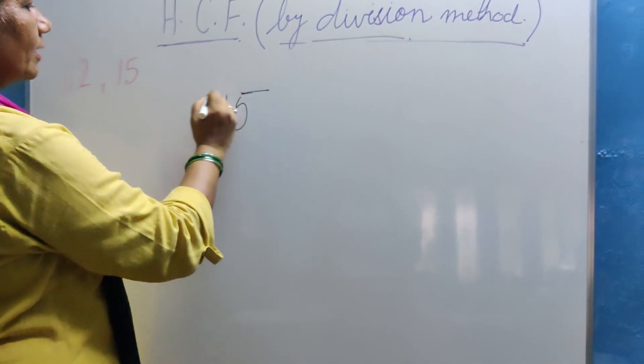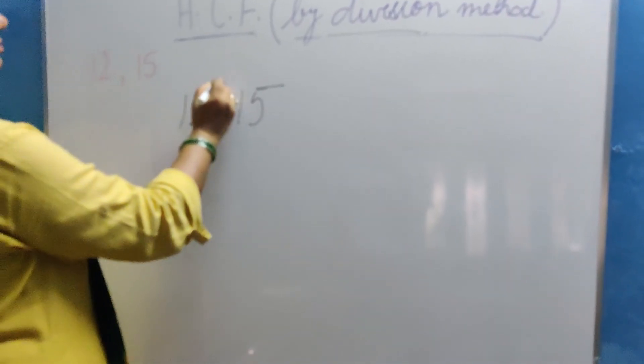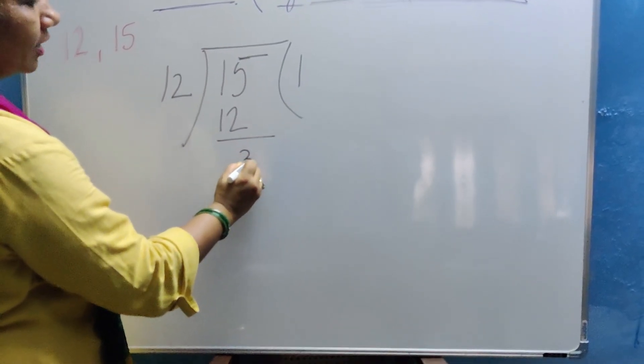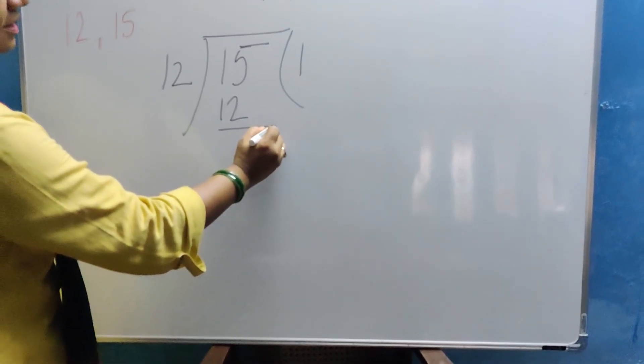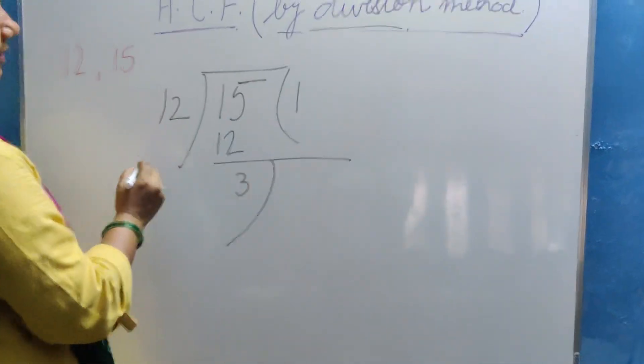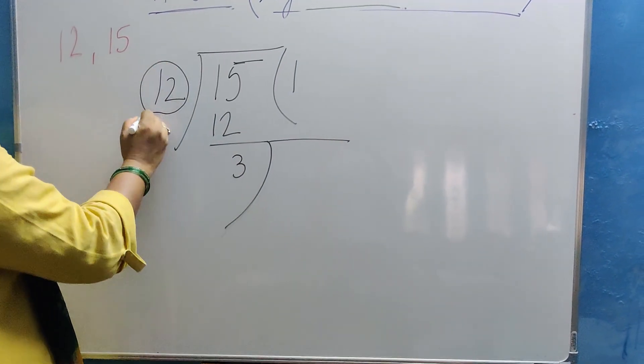So 15 divided by 12. 12 ones are 12. Remainder is what? 3. The remainder becomes the divisor. And what will you write inside here? This 12, this comes here.